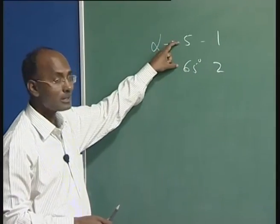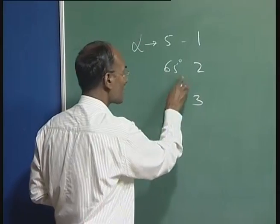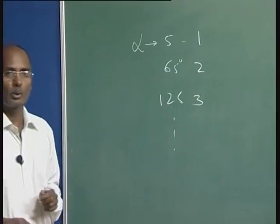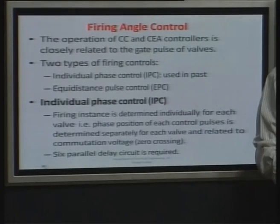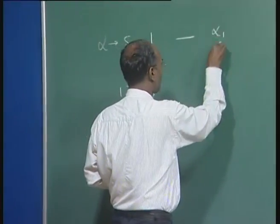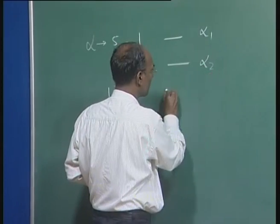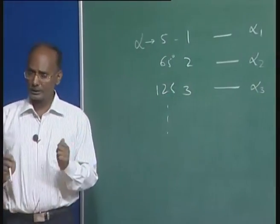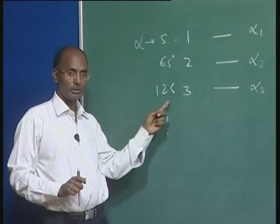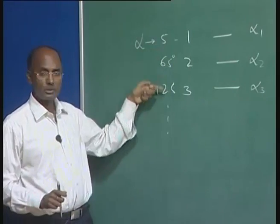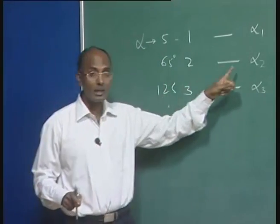In EPC the distance is equidistant — 60, 125, and so on. In IPC it is not so: we calculate alpha 1, alpha 2, alpha 3 individually. What happens here is that we have symmetry in the output because we are maintaining 60 degrees for each pulse. In IPC this may not be so. If there is no error in current — the controller is comparing the current with reference and they are equal — then alpha is fixed and not going to change.